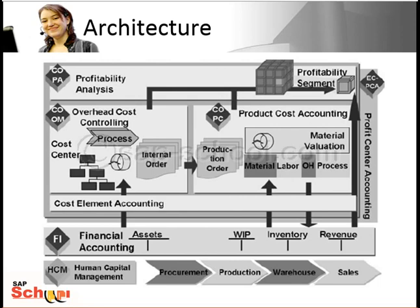These costs can be used to calculate operating results, which means you can calculate the profitability of various areas. Other SAP applications can post costs or revenues to management accounting. Postings to an expense account in FI, for example, can cause cost postings in COOM. In the same way, FI can post revenues directly to COPA. Cost flows also occur between FI and COPC when the raw material costs incurred in the production process are entered.